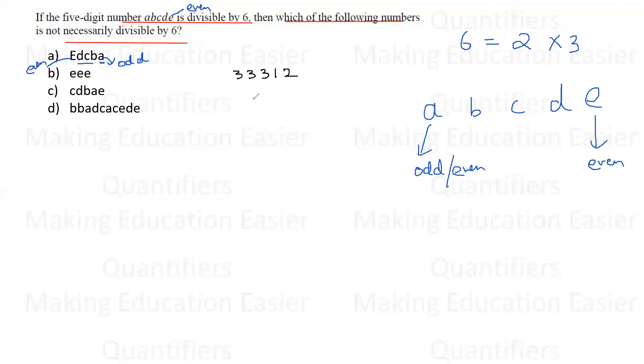But agar ma isko reverse order me likhu. If I write the number in the reverse order, then it would become 33312. Now students, is this number divisible by six? It cannot be a multiple of six because it is not even. Pahle even ho na toh zaruri hai. Right?